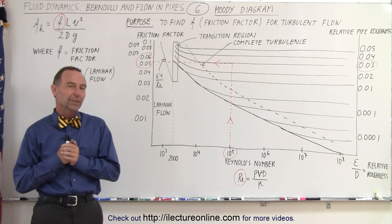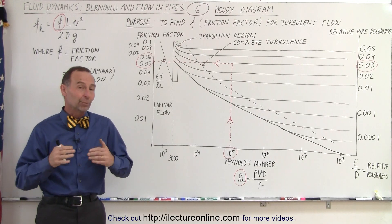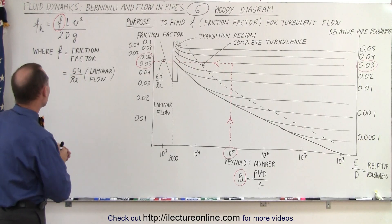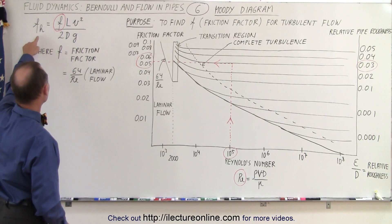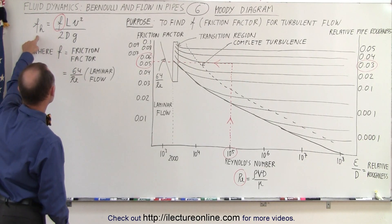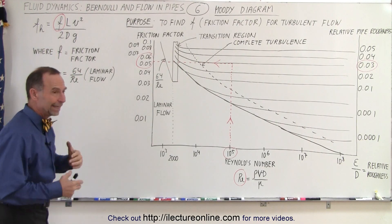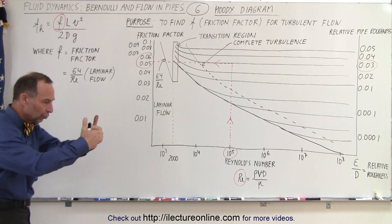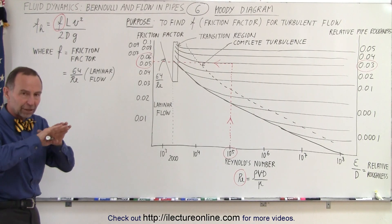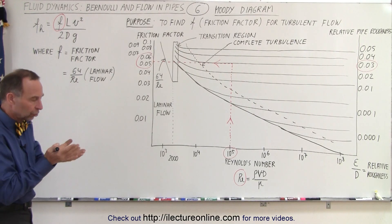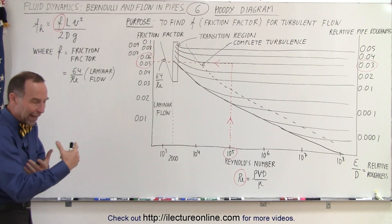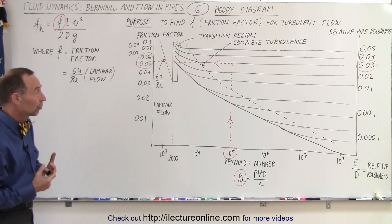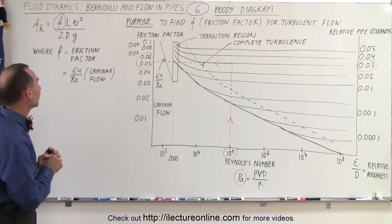Welcome to our lecture online. Let's go back and review what we've done so far. We figured out that there's something called the frictional head loss in fluid flow in a pipe, when there's internal friction because of the pipe, the construction of the pipe, and because of the molecular forces of the fluid flowing through the pipe.